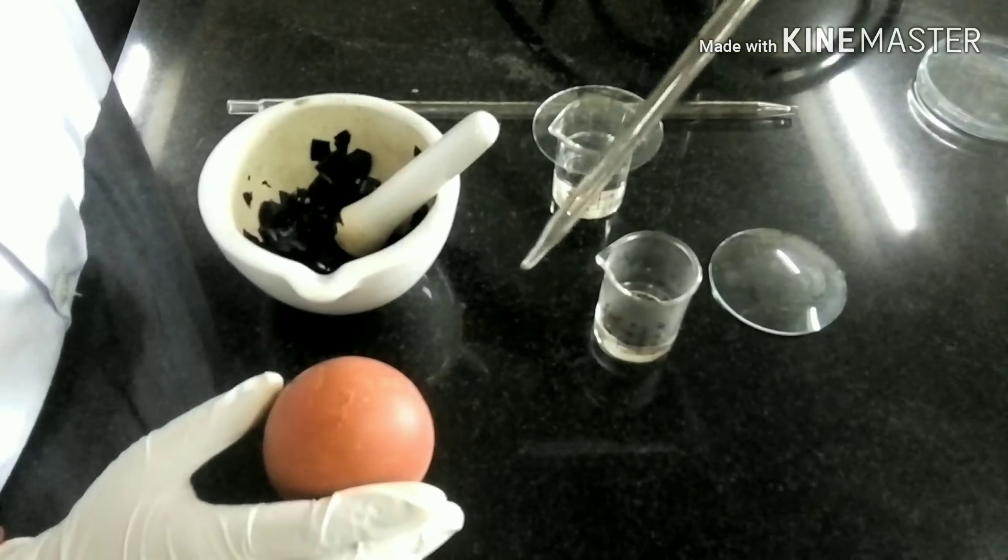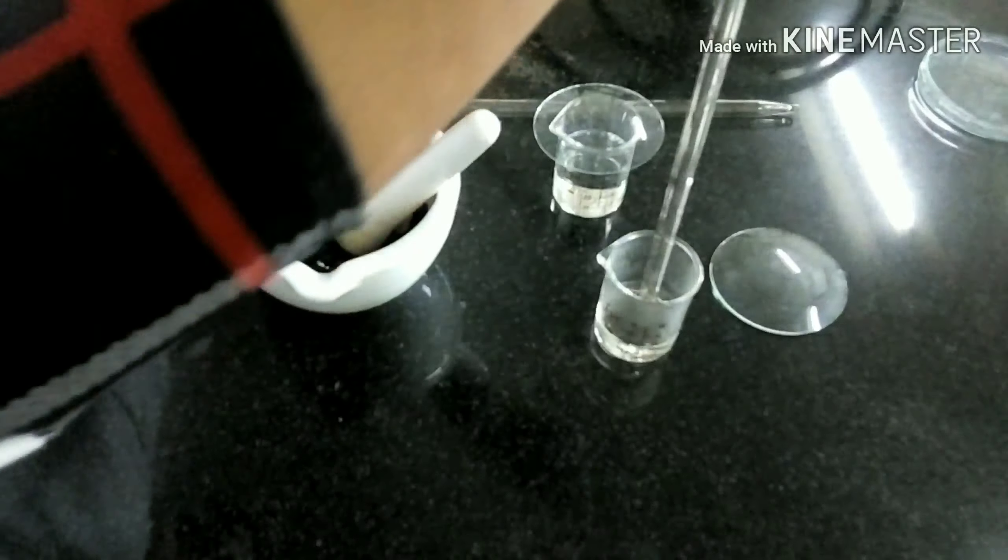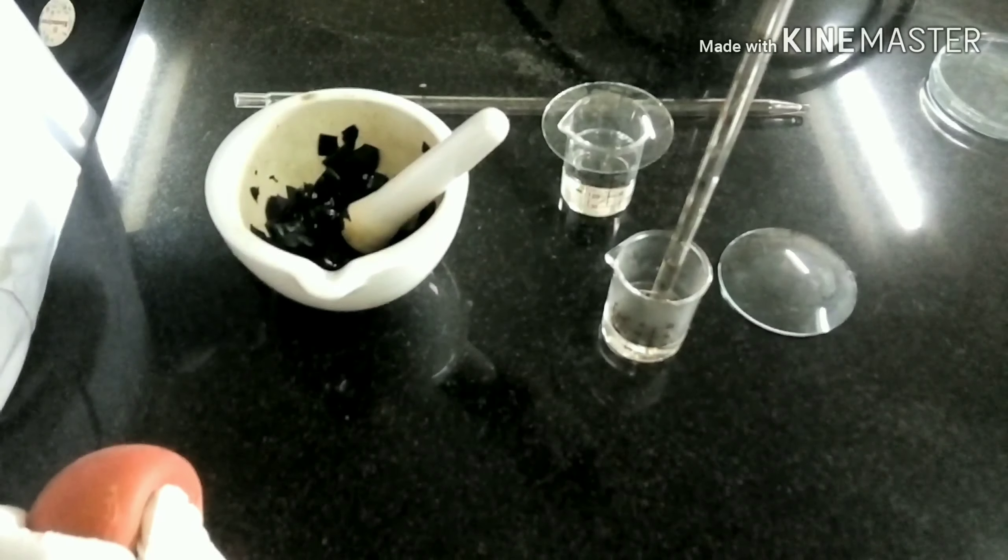Then add 2 ml of 0.5% HCl. Grind the leaves using mortar and pestle.